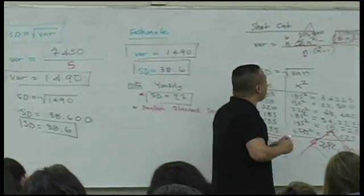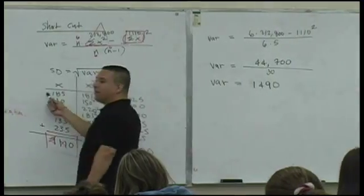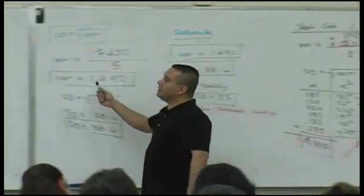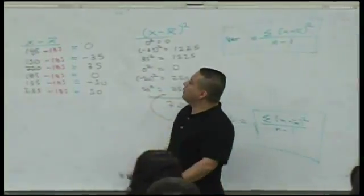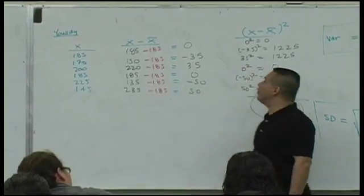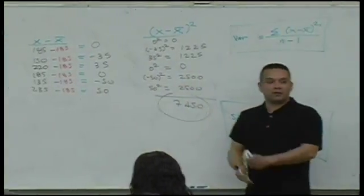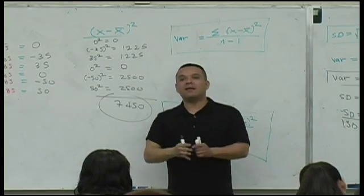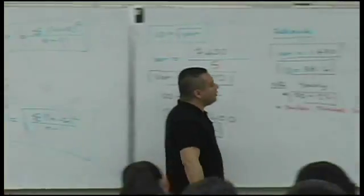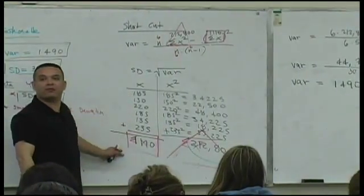You can have data values that have decimals. And using this definition or the long way, your mean will have decimals, the data values have decimals, you subtract that's a decimal, you square that's more decimals. What starts to happen is you get this sort of messy work to deal with. The shortcut formula cleans that whole process up really nice.